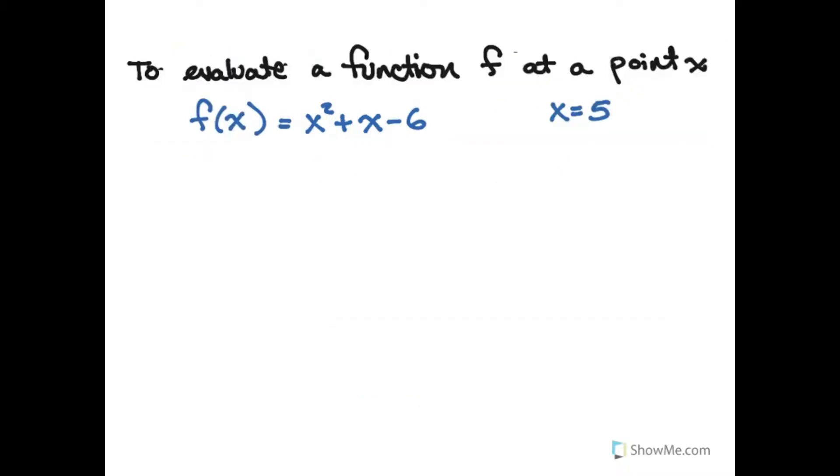And just like evaluating expressions for a given value of x we can evaluate a function for a given value of x. The notation that we use is f of the number 5 is the same expression with 5 put in for x. The number in parentheses takes the place of the variable in the equation. And so f of 5 in this case is equal to 24 because when I put 5 in for x I get 24.